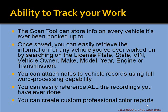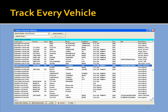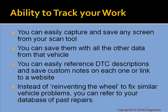The next power feature is the ability to track your work. The Ease Scan Tool can store info on every vehicle it's ever been connected to. Once saved, you can retrieve information for any vehicle you've worked on by searching license plate, state, VIN, vehicle owner, make, model, year, engine, or transmission. You can attach notes with full word processing capability, easily reference all recordings via the built-in database, and create custom professional color reports. You can also save any screen from the scan tool, mix and match recording data with photos and screenshots, and reference DTC descriptions with custom notes or links to websites — so instead of reinventing the wheel each time, you can refer to your database of past repairs.